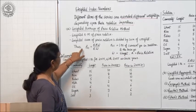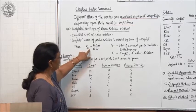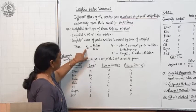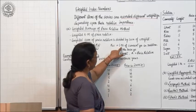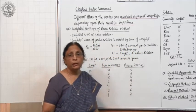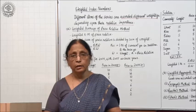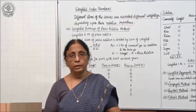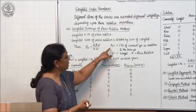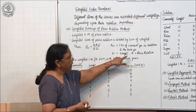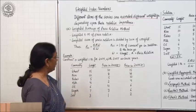The formula is P01 = σRW / σW. P01 is the index number of the current year in relation to the base year. P denotes index number, 0 denotes base year, and 1 denotes current year. W is the weight and R is the price relative.